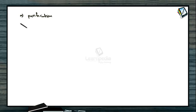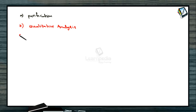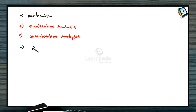The first step is purification. Purification depends upon the nature of the organic compound. We will follow various methods like crystallization, sublimation, and distillation. Next is qualitative analysis — to find out what types of elements are present in the organic compound. And the next one is quantitative analysis — how much percentage of these elements are present. The next one is determination of molecular mass of the given organic compound.